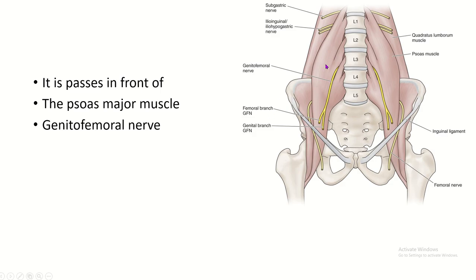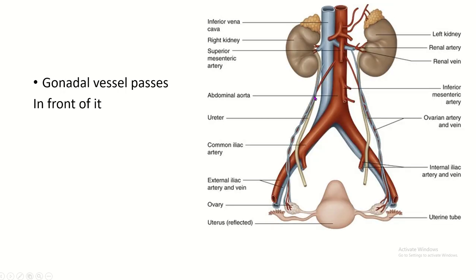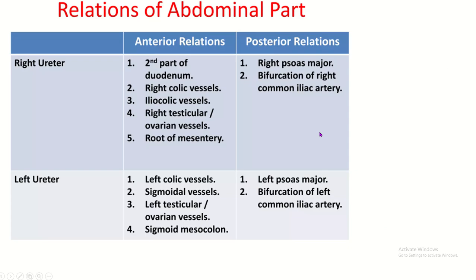The ureter is present in front of the psoas major muscle and the genitofemoral nerve. In front of the ureter, the gonadal vessels are present. The relations of the right ureter and left ureter differ from each other.